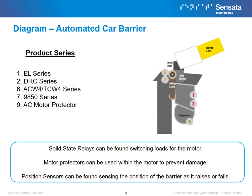Shown here is one example of an automated car barrier and where our various solutions can be found in that system. Our solid state relays can be found switching the loads for the motor that raises the barrier. The DRMS series can be particularly useful in gate systems that are operated frequently to maximize motor lifetime. Position sensors can be found sensing the position of the gate as it retracts or deploys, ensuring that jamming does not occur, while the motor protector can be found in the motor of the unit.